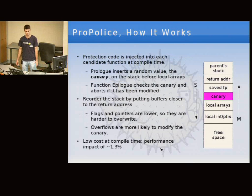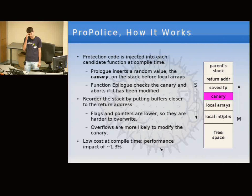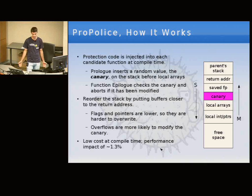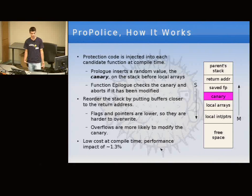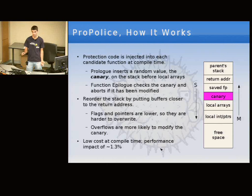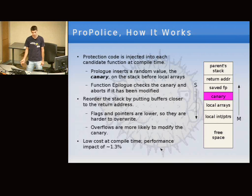ProPolice protects programs by inserting code into them when you compile them. It inserts protection code into each function it deems necessary — if a function doesn't use any buffers on the stack, it doesn't need protection, so that's a quick optimization. It uses heuristic checks to determine which functions need it. In the prolog of each function, it generates a random 32-bit integer called a canary and puts it on the stack before the local arrays. In the epilog, it checks that the canary hasn't changed. If it has, it kills your program.